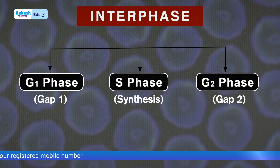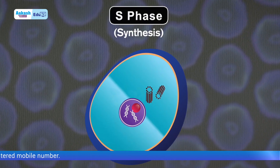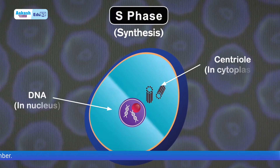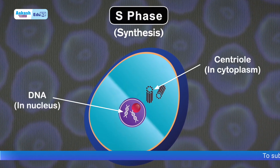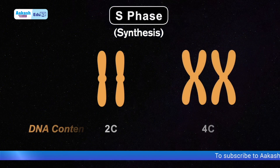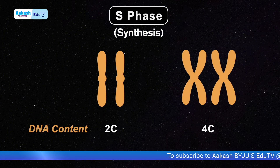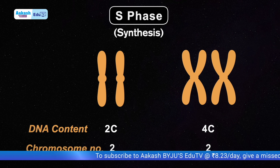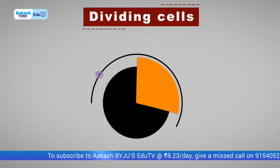An important point for S phase is that here DNA and centrioles duplicate. However, the chromosome number always remains the same.